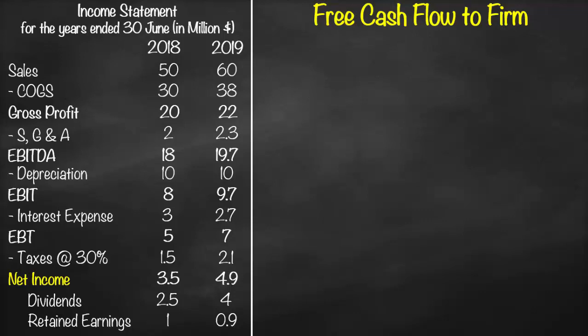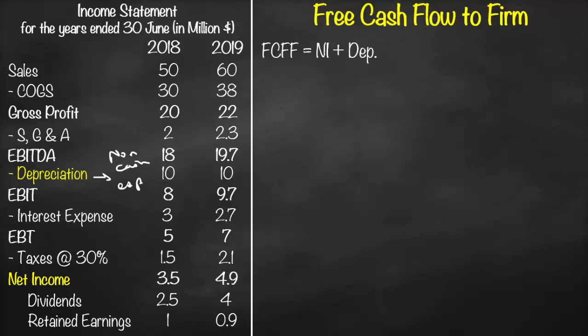In order to calculate free cash flow to firm, we start with our income statement and get the bottom line, which is net income. Items in our expenses that we don't actually pay are called non-cash expenses — that's depreciation. Free cash flow to firm is the cash flow available to both debt holders and shareholders, meaning it's the cash flow available before we pay anything to debt holders or equity holders.